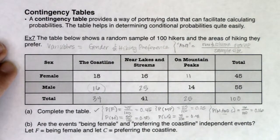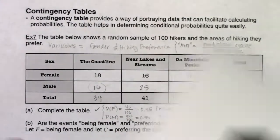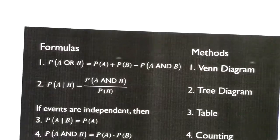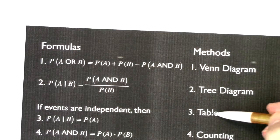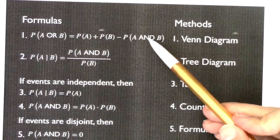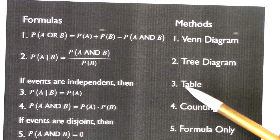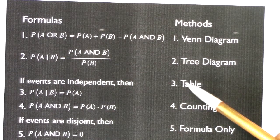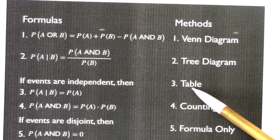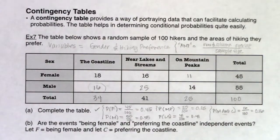For males and coastline: here's the row for the males, here is the column for the coastline — where do they overlap? Right here at 16. So this will be 16 in my numerator and my total sample size is 100, giving 0.16. The AND on a table is the row and column overlap divided by the sample size in the bottom right of your table.